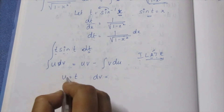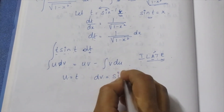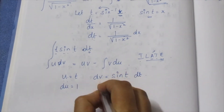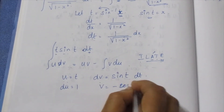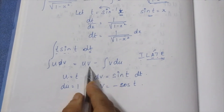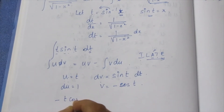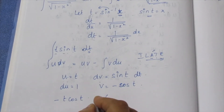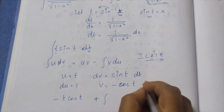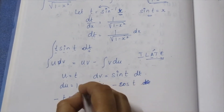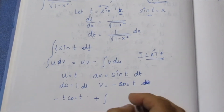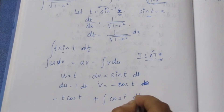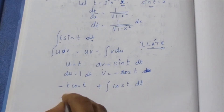Balance. dV equals sin T dT. So differentiate: dU equals 1·dt. Integrate: V equals minus cos T. Substitute into the formula: U·V minus integral V·dU gives minus T·cos T, minus integration of minus cos T·dt. Minus into minus gives plus. So the result is minus T·cos T plus sin T plus C.